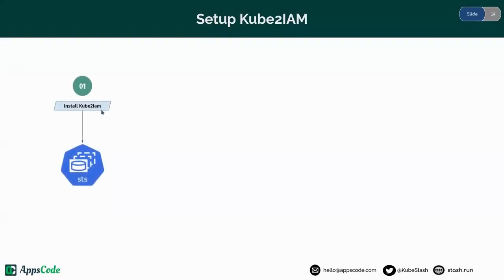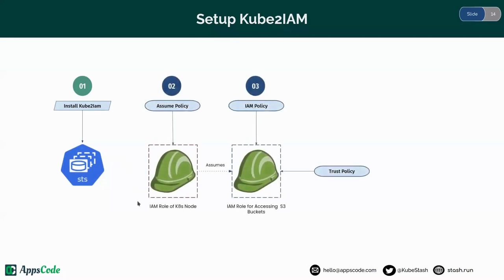Let's see how to set up Kube2IAM. First, you have to install Kube2IAM in your cluster — I have already installed it. There are two IAM roles here: the first one is for the Kubernetes node, and the second one is for accessing the S3 buckets. This node role should contain the assume policy, and the bucket-accessor role should be attached with the policy that defines the access permission for the S3 buckets.